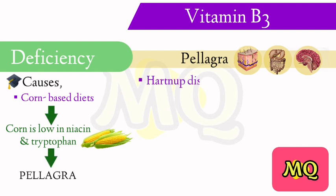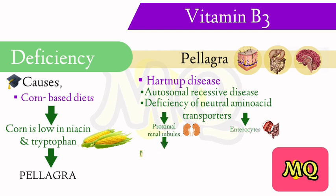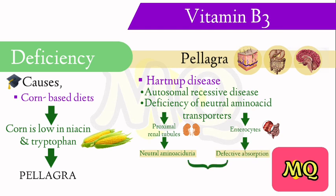Hartnup disease is an autosomal recessive disease. Deficiency of tryptophan-like neutral amino acid transporters in proximal renal tubular cells and enterocytes causes neutral aminoaciduria and defective absorption of tryptophan in the gut.